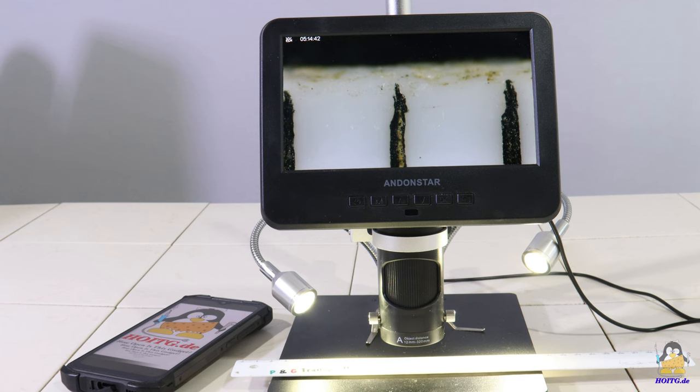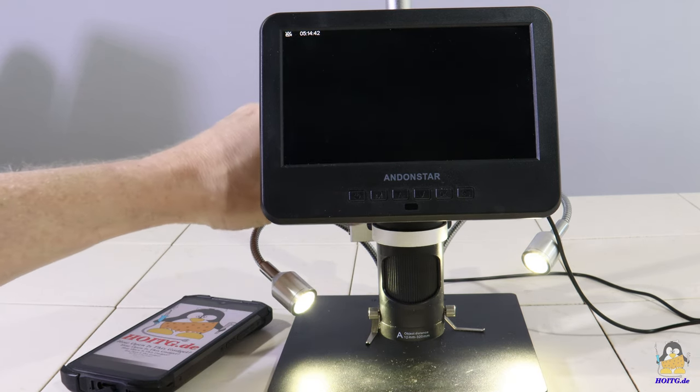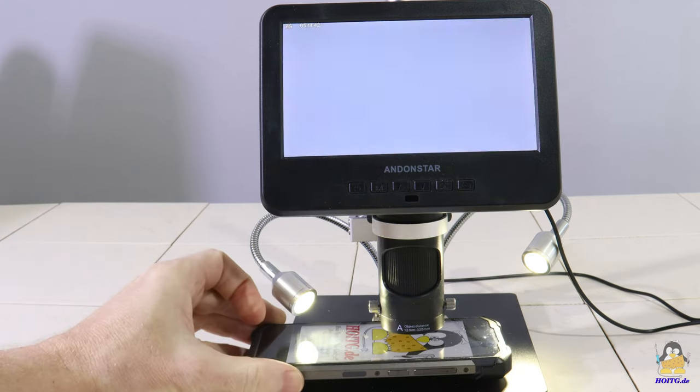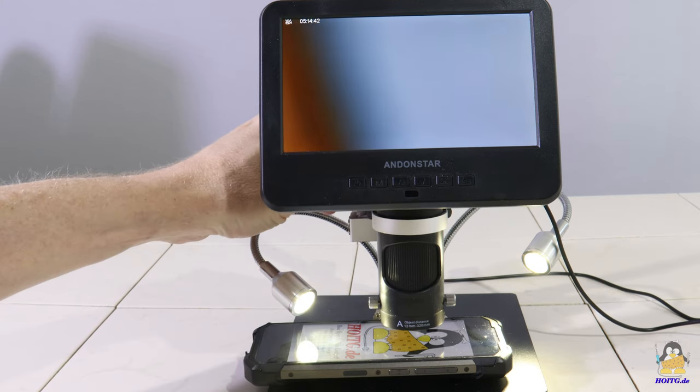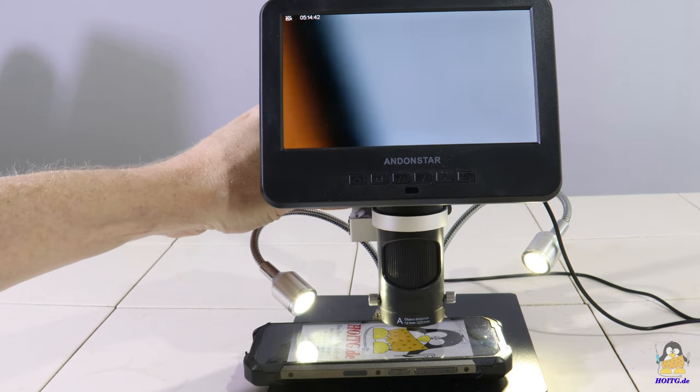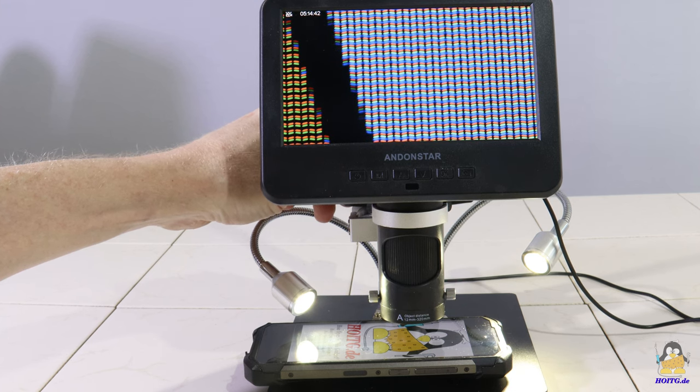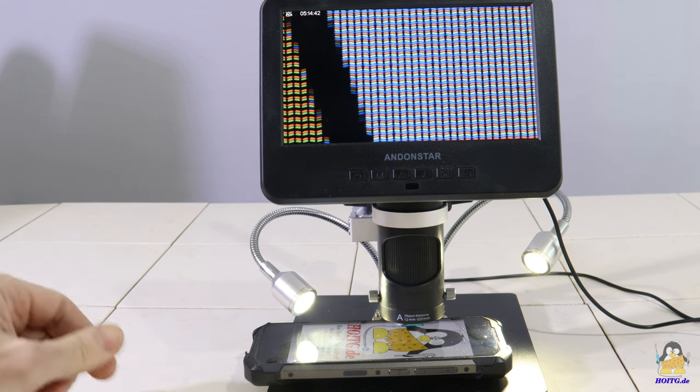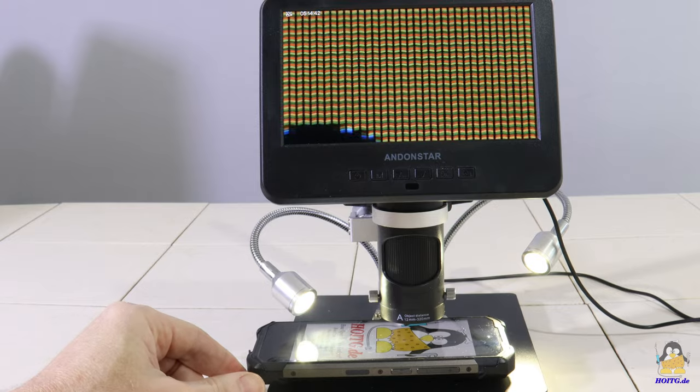Since the millimeter scale of the ruler is gigantic for a microscope, an everyday object is used as the next reference grid, a smartphone screen. The display is composed of a regular grid of colored dots. The approximately 2.2mm correspond to 36 pixels on the smartphone screen.